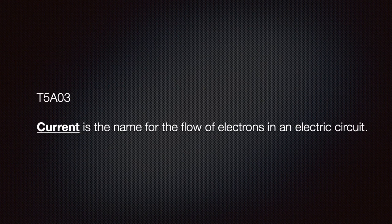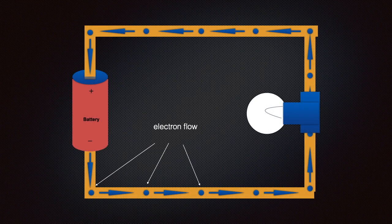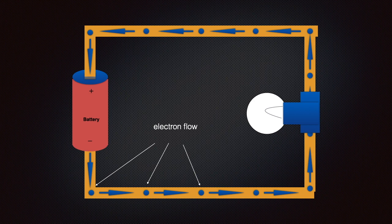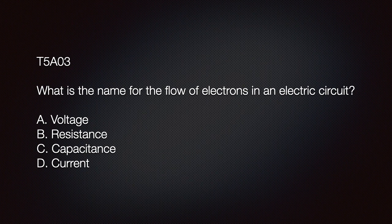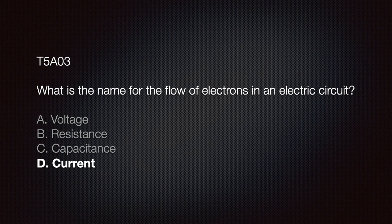Again, we need to know that current is the name for the flow of electrons in an electric circuit. Remember that if water were current, then voltage would be like a tube or a pipe that it flows through. Our exam question reads like this. What is the name for the flow of electrons in an electric circuit? A voltage, B resistance, C capacitance, or D current? The answer is, of course, D current.